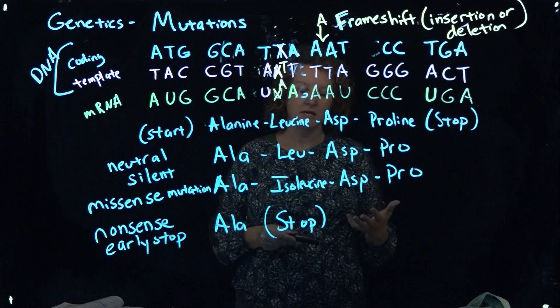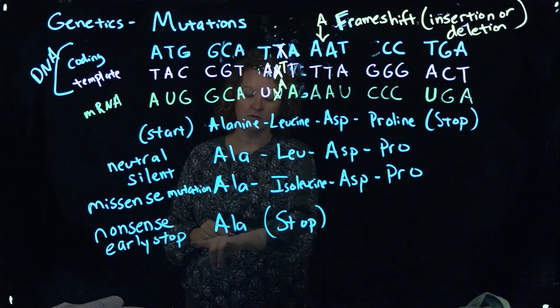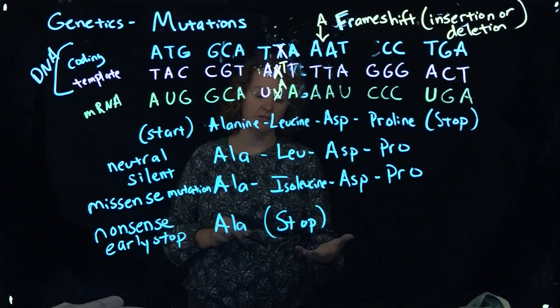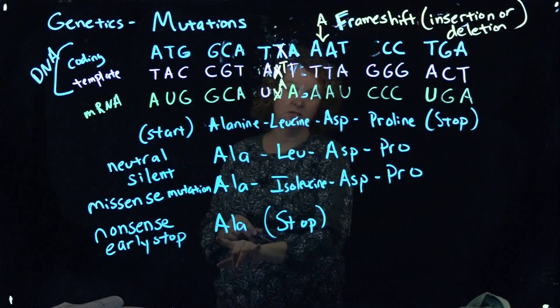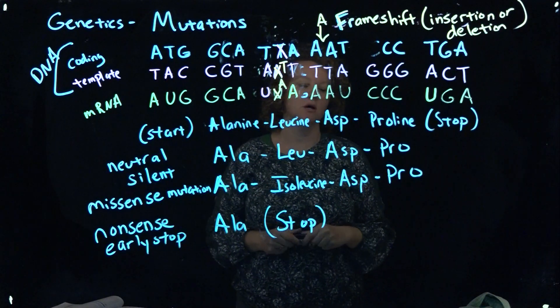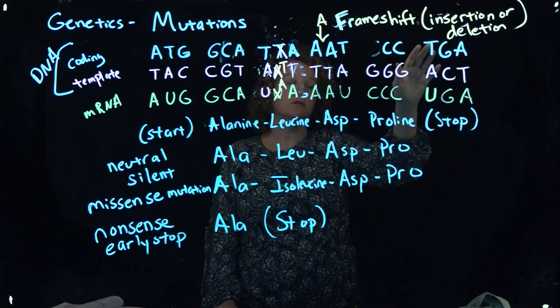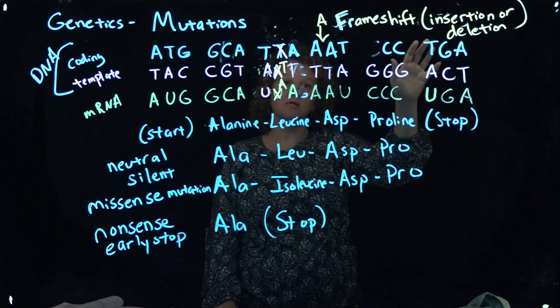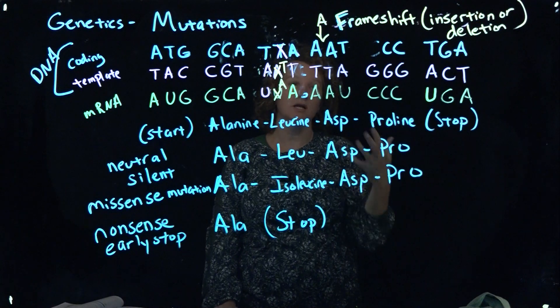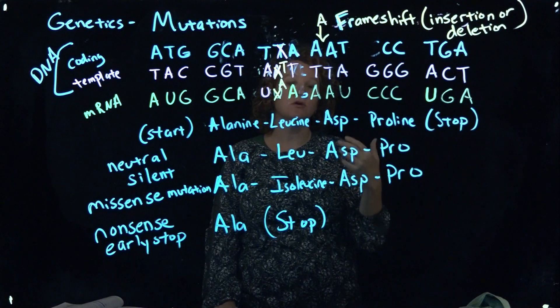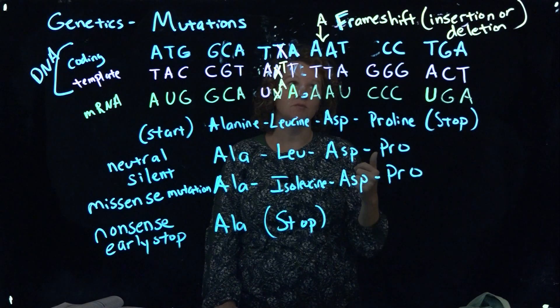This frameshift type is very, very dangerous and typically results in what's called a nonsense mutation, which I already mentioned are the worst types of mutations normally to have. So frameshifts are very, very deleterious. A lot of known mutagens can do this - radiation, certain chemical mutagens are known to cause some of these frameshift mutations.